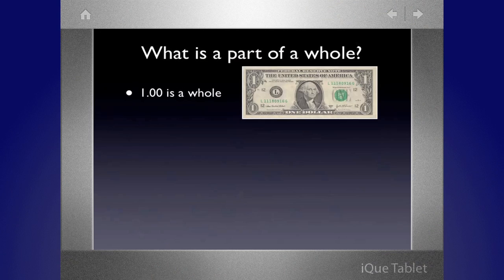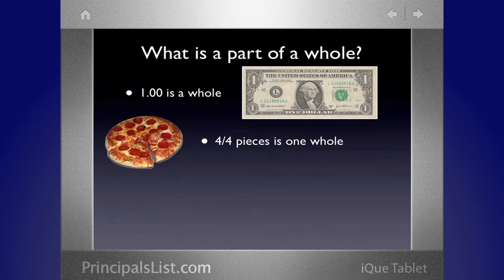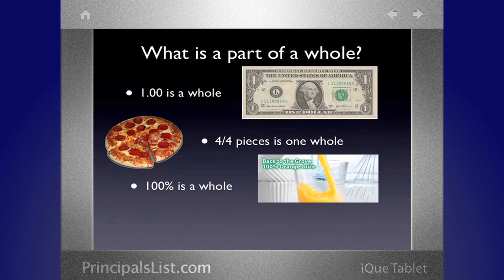In order to know what a part is, you need to know what a whole is. We typically think of wholes as like a whole dollar for decimals, or for fractions, we typically think of like a whole pizza or a whole candy bar. Four pieces out of four pieces, that's one whole.